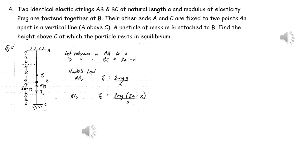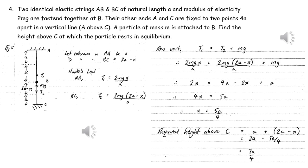In this type of problem, we first let one of the strings have an extension x. Here the extension in string AB is x, which means the extension in string BC must be 2a minus x, so the total length between A and C is 4a. We apply Hooke's Law to find the tension in the top and lower strings in terms of x. Resolving vertically gives an equation to find x in terms of a, and then we work out the required height above point C.